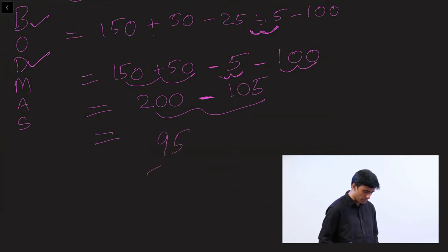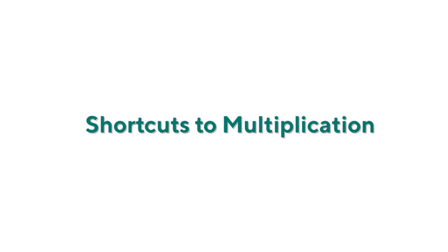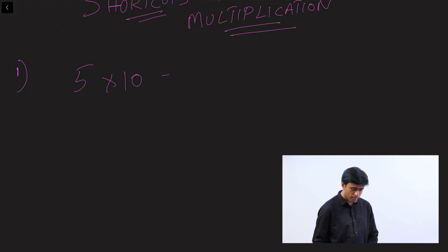When you have a complex mathematical expression with all the operators, remember the word BODMAS. Now let's learn a few shortcuts for multiplication. The first shortcut: to multiply a number by 10, 100, and so on, just add 1 or 2 zeros at the end. For example, 5 × 10 = 50, 5 × 100 = 500, 7 × 1000 = 7,000.